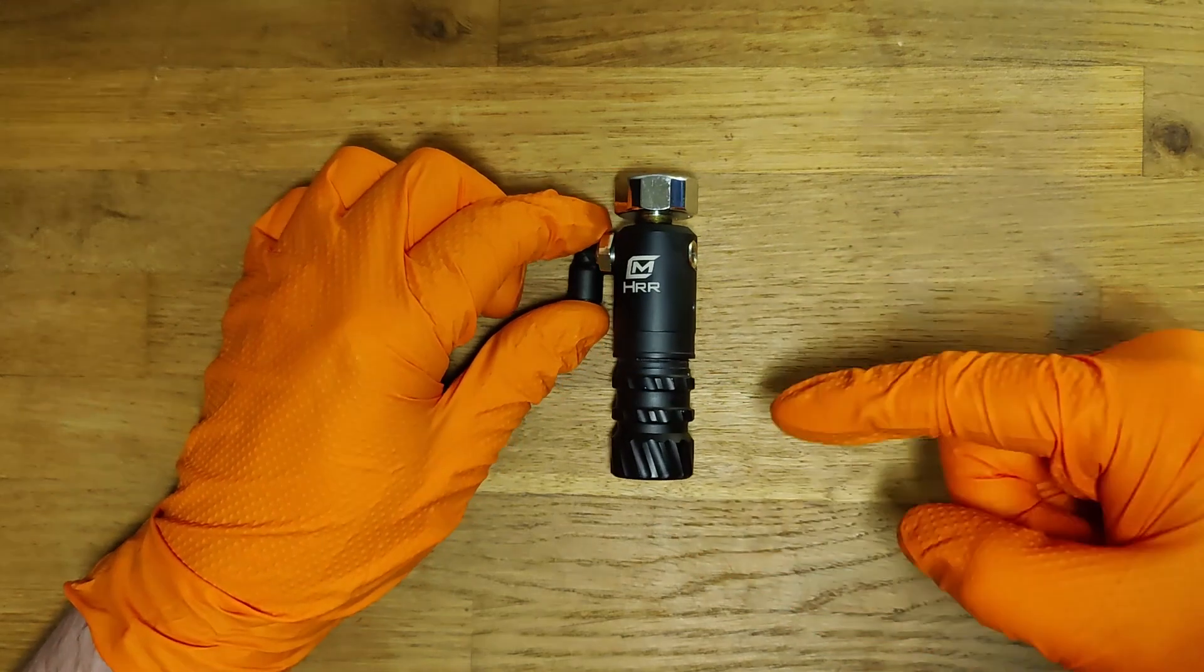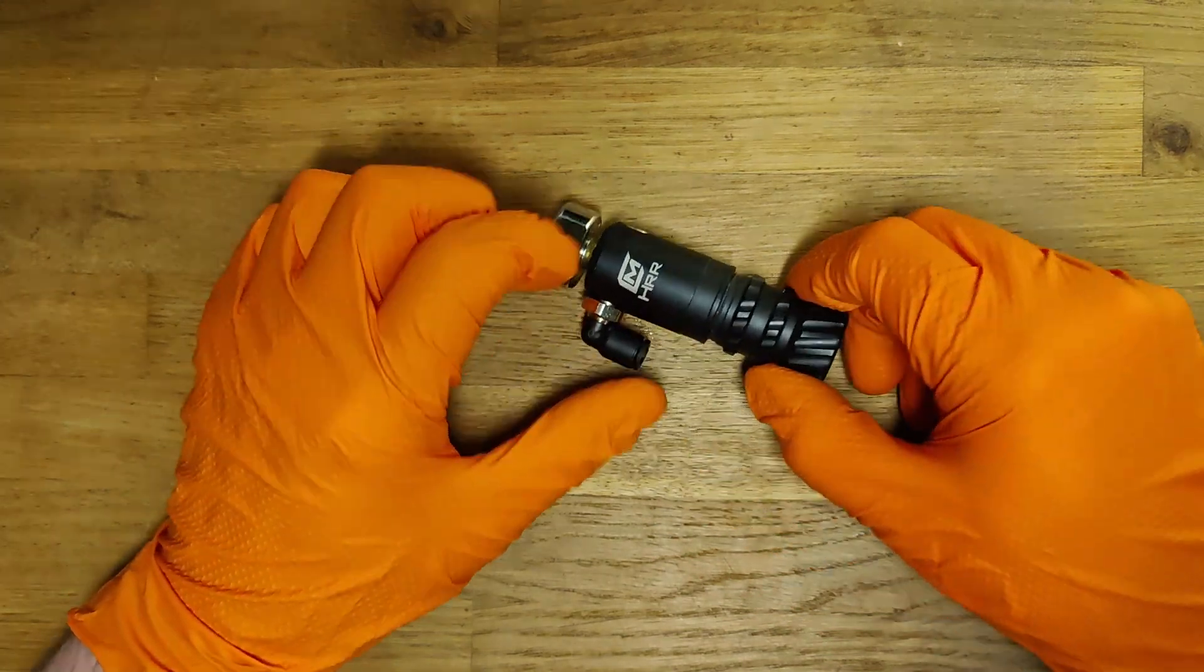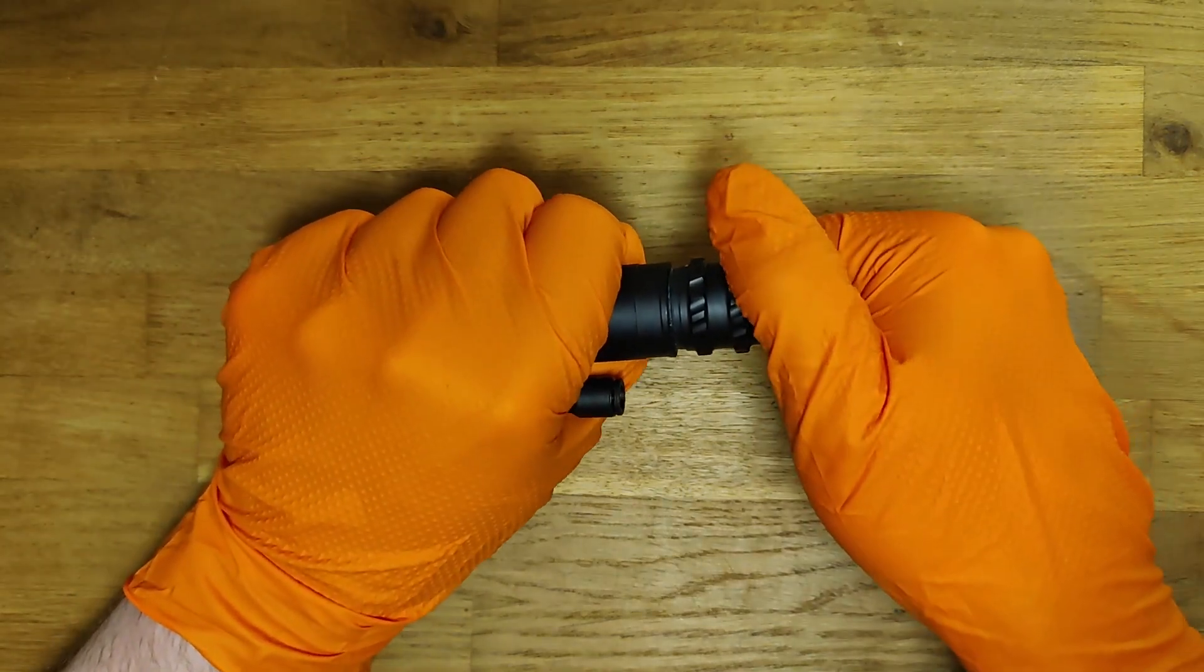To get to the spring, we have to take down the bottom section of the pressure regulator. To do it, hold the top section and unscrew it.